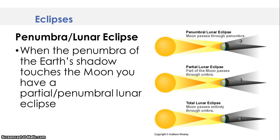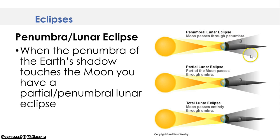Now we're going to talk about the penumbra during a lunar eclipse — remember, lunar meaning moon. You don't need to write this down; we're just going to talk through it. When the penumbra of the Earth's shadow touches the moon, you have a partial penumbra lunar eclipse. You have your light source hitting your Earth. That lighter area — the part that surrounds the umbra — any of that area, the light gray, is where you're going to have your partial lunar eclipse.